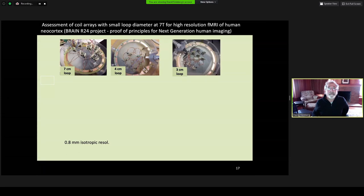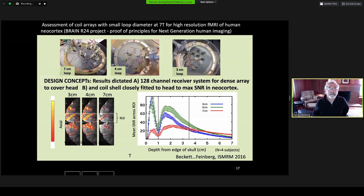I want to talk about the receiver system development. The design concept came from our R24 project, Proof of Principle, where we tested multiple different diameter loops in small eight-channel arrays and found that the three to four centimeter loop diameter gave the highest signal in the cortex beyond the scalp. We wanted to maintain that, so we need to cover the whole brain up to a 128-channel receiver system. It also educated us that the coils need to be very close to the head to get maximum signal in the neocortex.